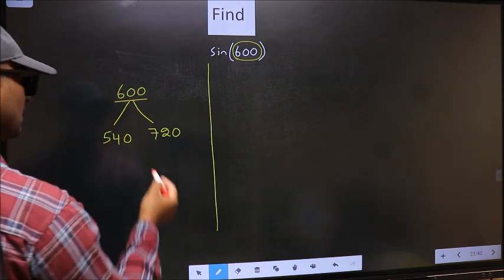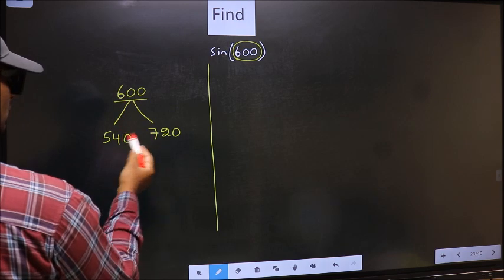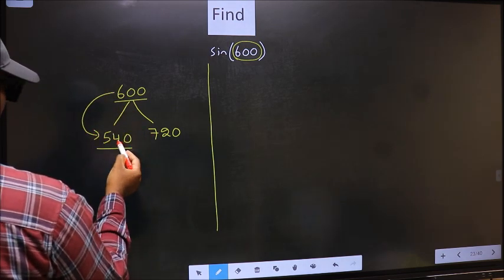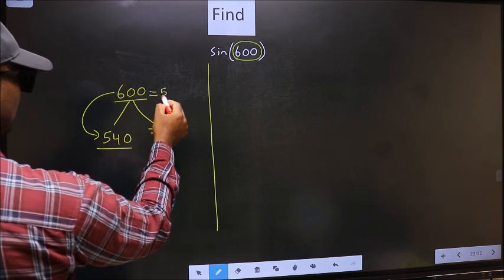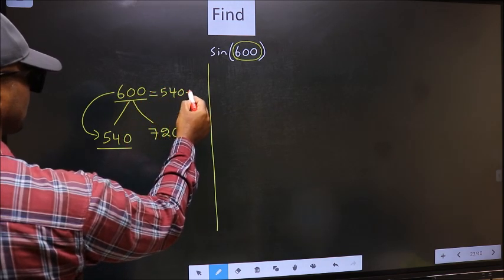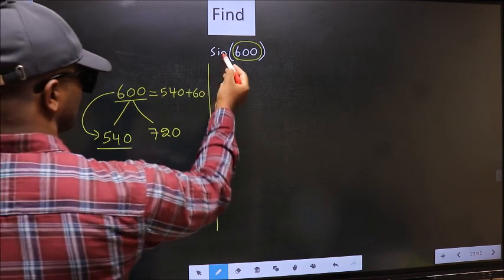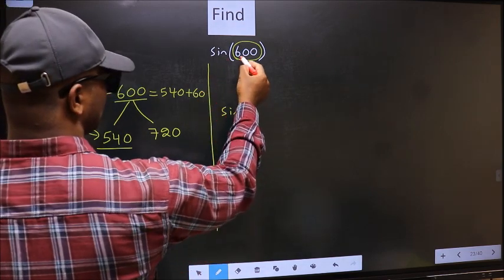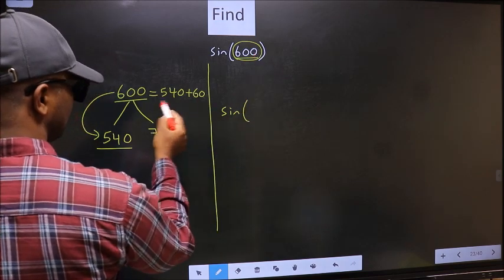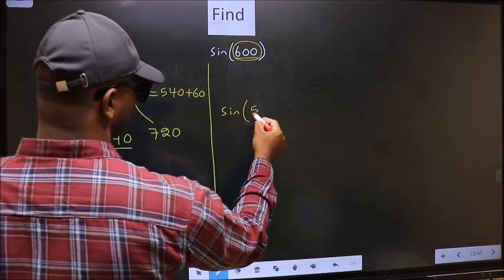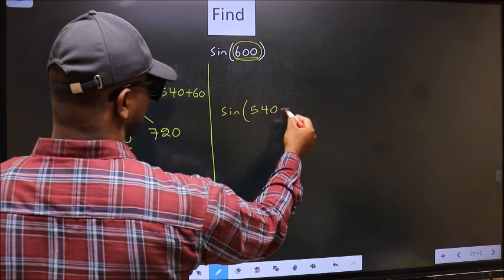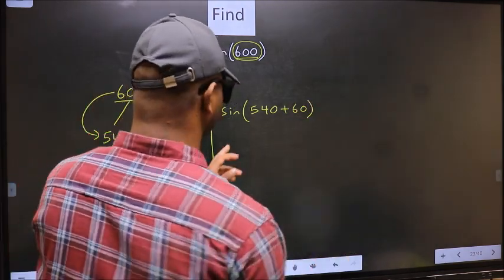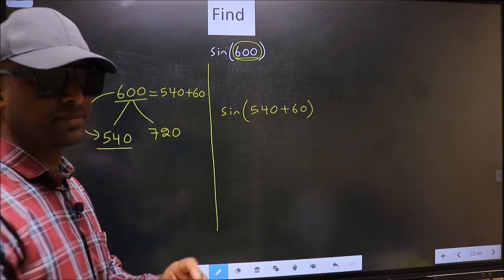Next, 600 is close to which number? This is close to 540. So 600 should be written as 540 plus 60. So this will become sine. In place of this, we should write 540 plus 60. This is your step 1.